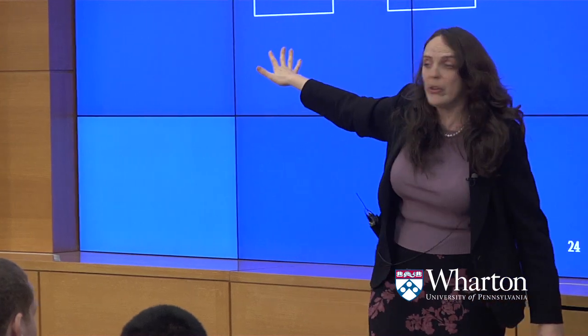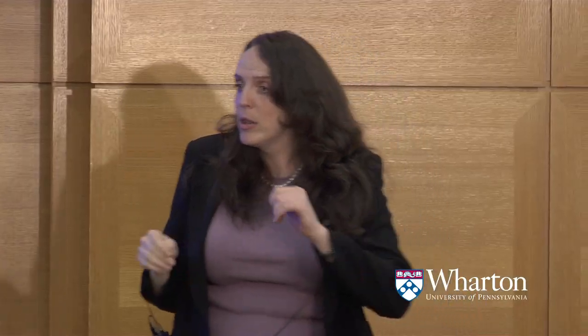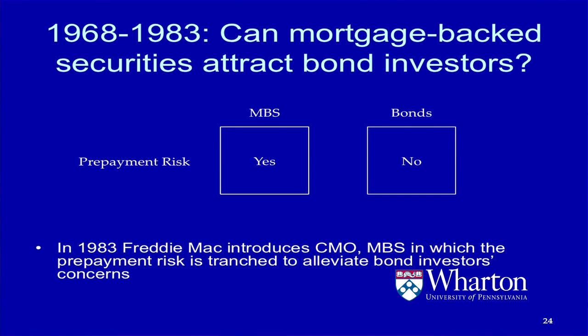For the first 15 years of mortgage-backed securities' existence, they would play this game. The mortgage bankers would come up with some way of measuring or managing prepayment risk, come to bond investors and ask does this work? The bond investors would say no, this does not work — see you guys later, we don't play this game. And literally this process went on for 15 years. Finally, in 1983, Freddie Mac introduced a new type of mortgage-backed security.